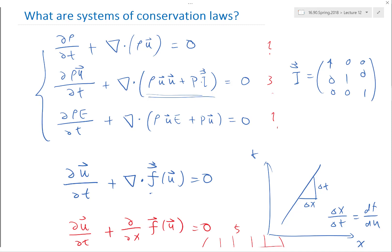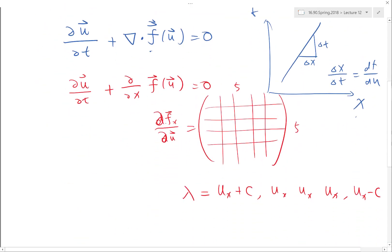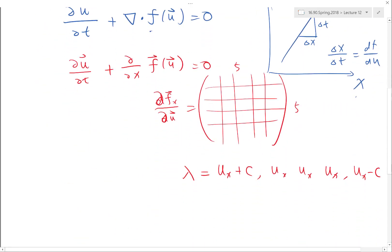That means the flux also has to be 5-dimensional in both X and Y and Z directions. If you write down the same matrix for Fy, you would have Uy + c, Uy, Uy, Uy, and Uy - c. So these are what the waves are doing.